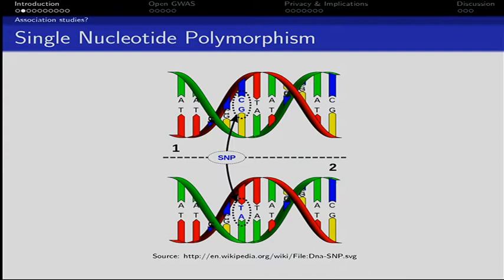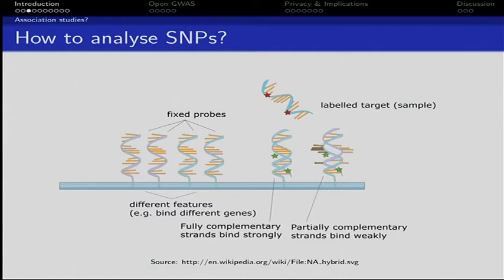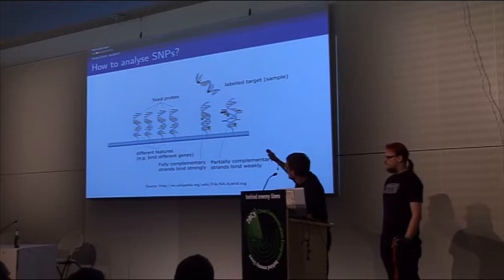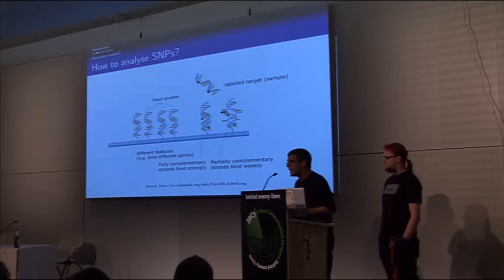In the lab, if you want to analyze SNPs, you have to use microarrays, which — if you recall high school — are based on the principle that DNA strands bind to their antagonists. We have fixed probes, and in the middle we have a fully complementary strand binding. Because these probes are labeled with fluorescence, you can see the light in the lab.